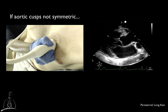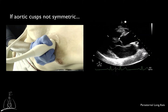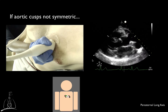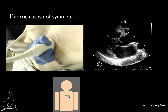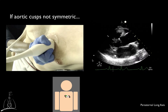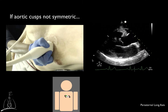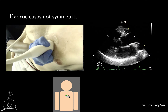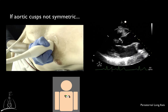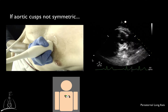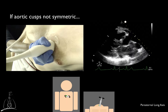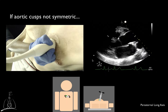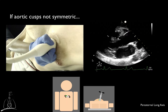If the aortic cusps do not appear symmetric, a slight rotation of the transducer should be performed in either direction. If rotating the transducer is insufficient to optimize visualization of aortic cusps, tilting the tail of the probe in either direction may help.